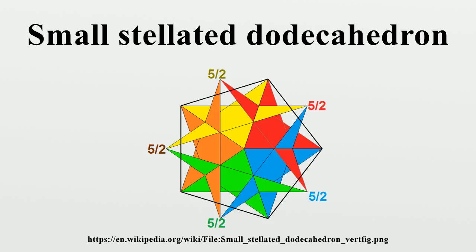The truncated small stellated dodecahedron looks like a dodecahedron on the surface but it has 24 faces, 12 pentagons from the truncated vertices and 12 overlapping.